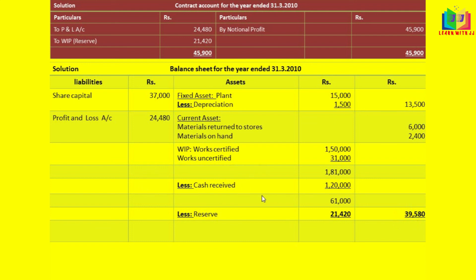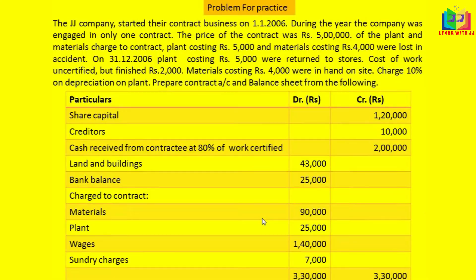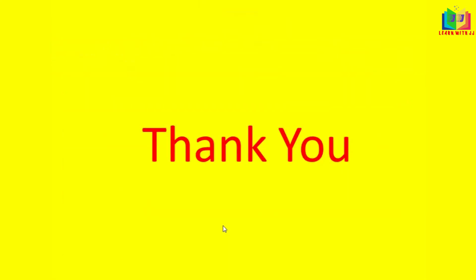Now we can balance this. We got both sides totaling 61,480. This is the full balance sheet after preparing the contract account. I hope we are now clear on how to prepare the contract account and balance sheet. I have given you a small problem for you to practice. Thank you for your patience listening.